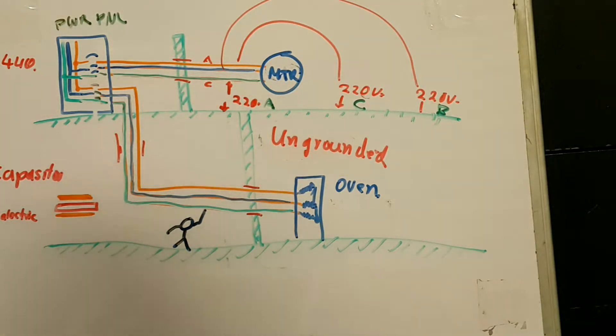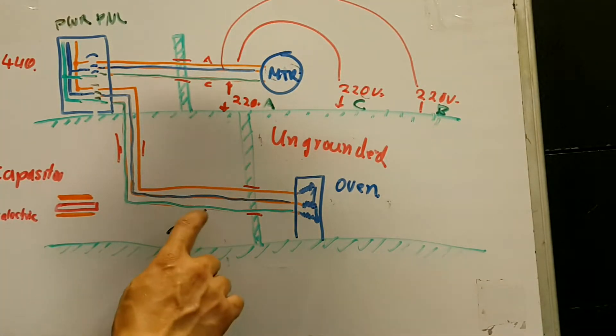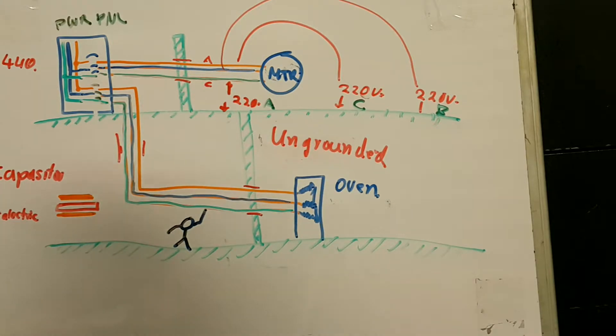Now, after we saw that, what that means to you is that if you go out there and you touch one of those lines or phases, you are going to get shocked by 220 volts, in this case.